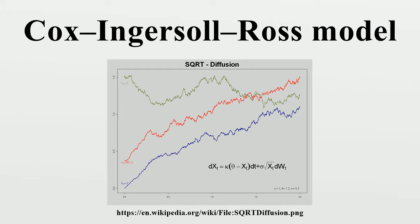It was introduced in 1985 by John C. Cox, Jonathan E. Ingersoll, and Stephen A. Ross as an extension of the Vasicek model.